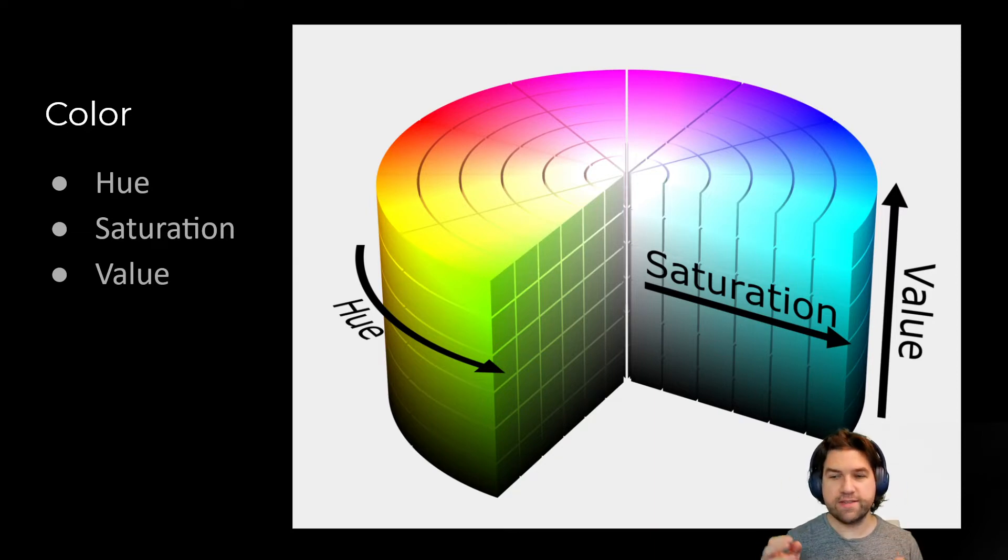Hue being the sort of color the thing is. Saturation being how much of that color is in it, going from a pure saturated version of the color, like very vibrant and bright, to gray, completely gray, without any color in it at all.